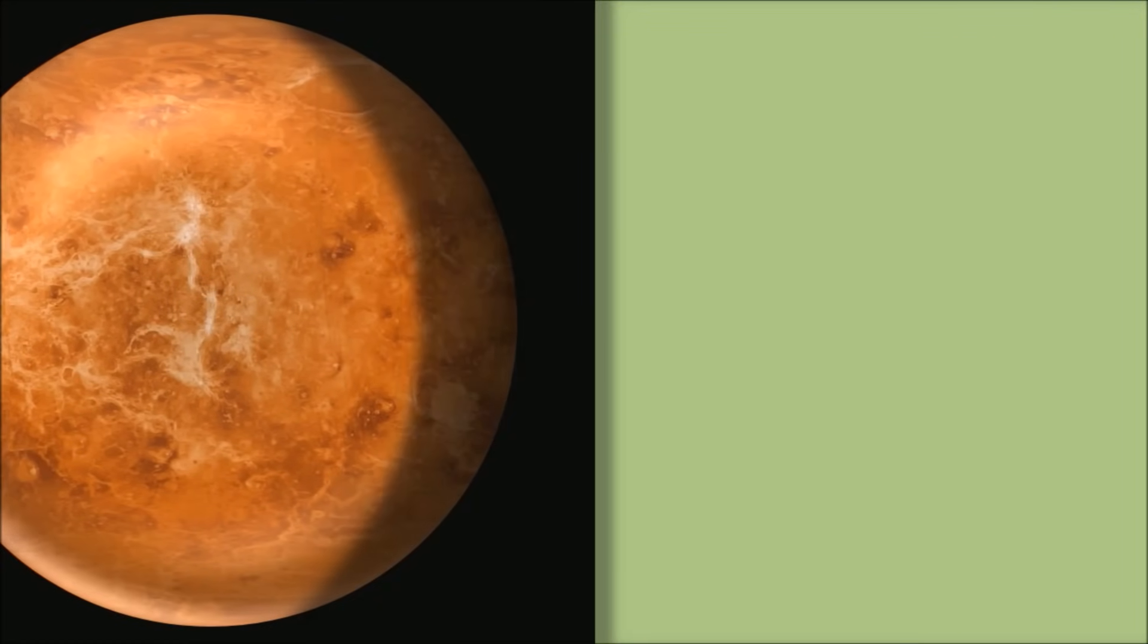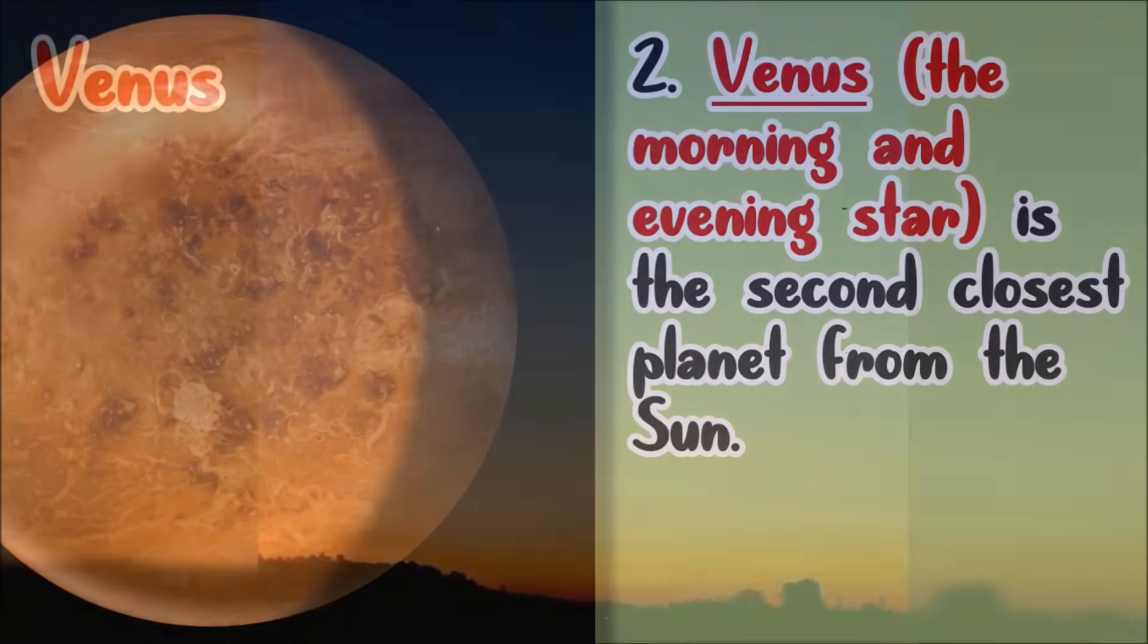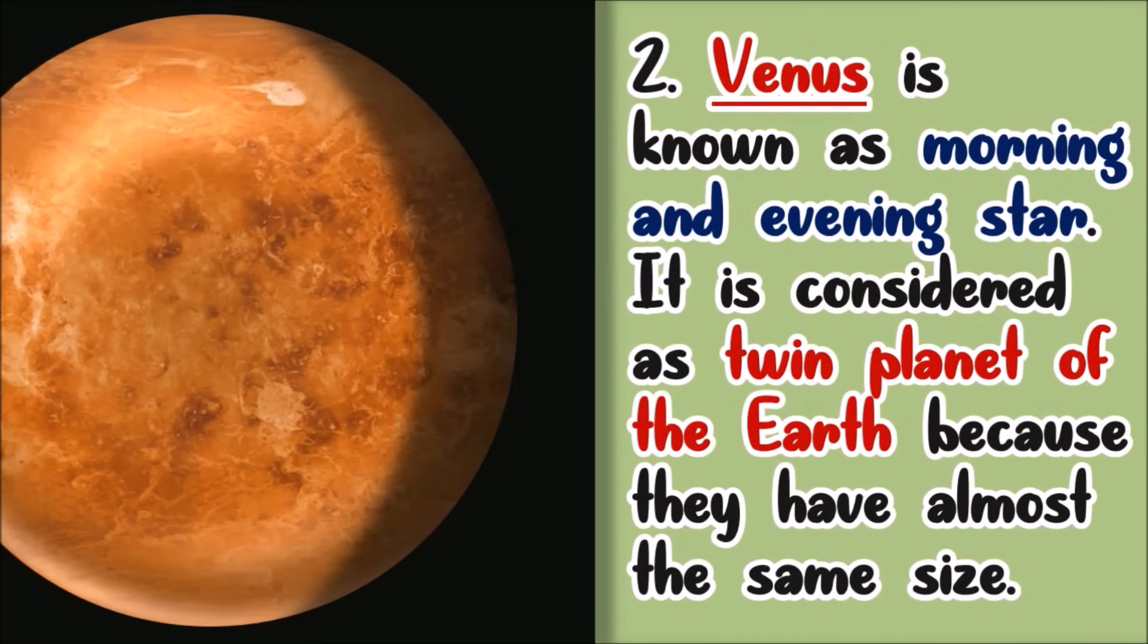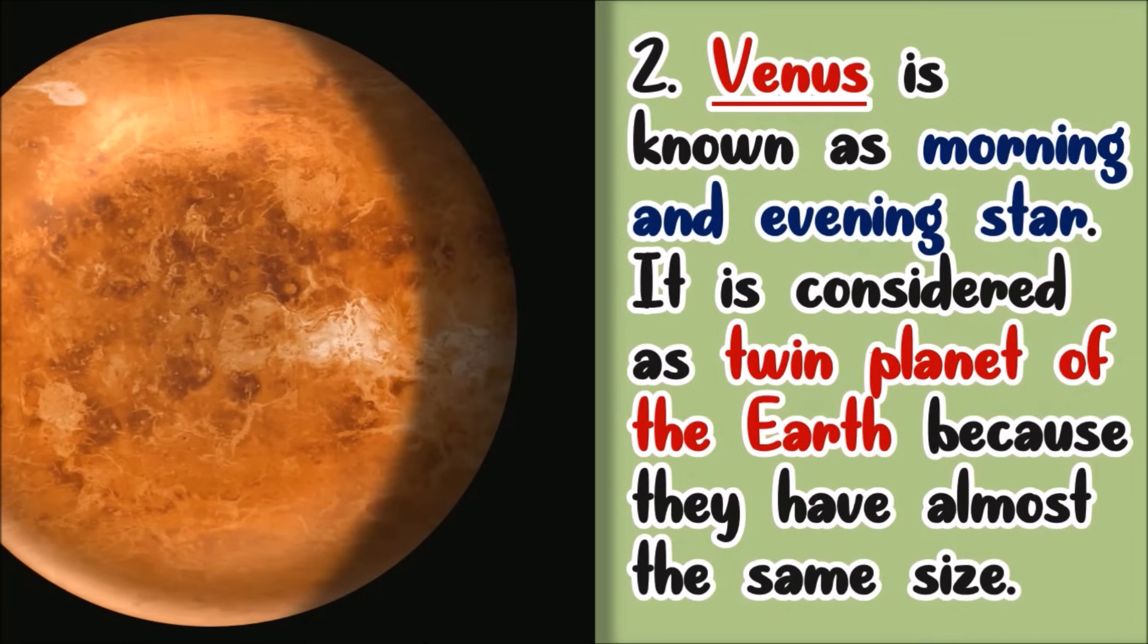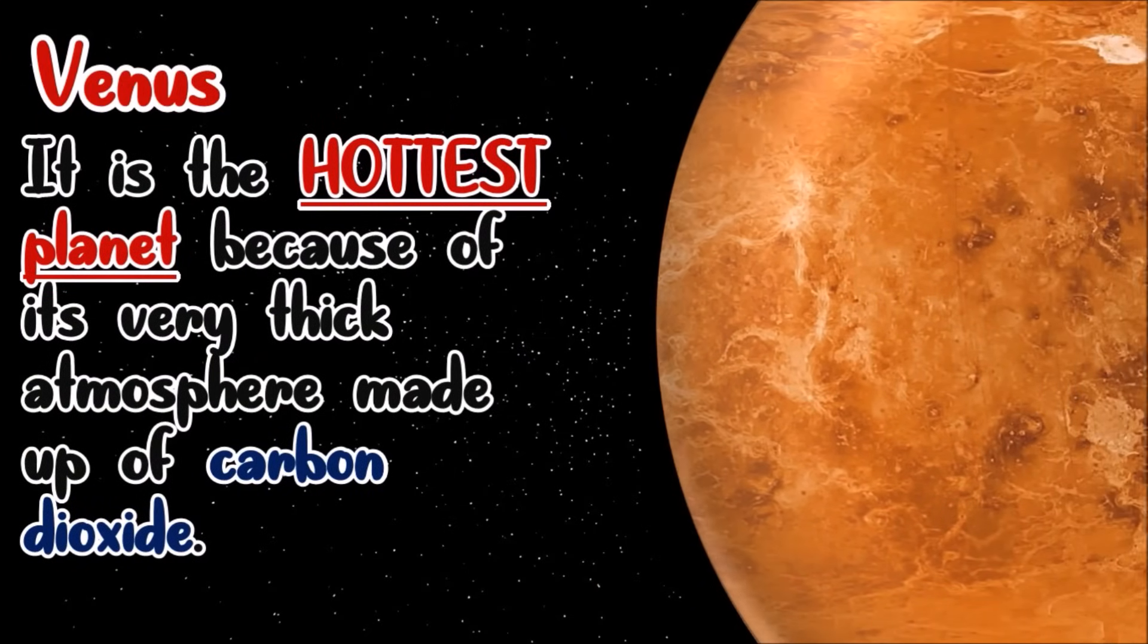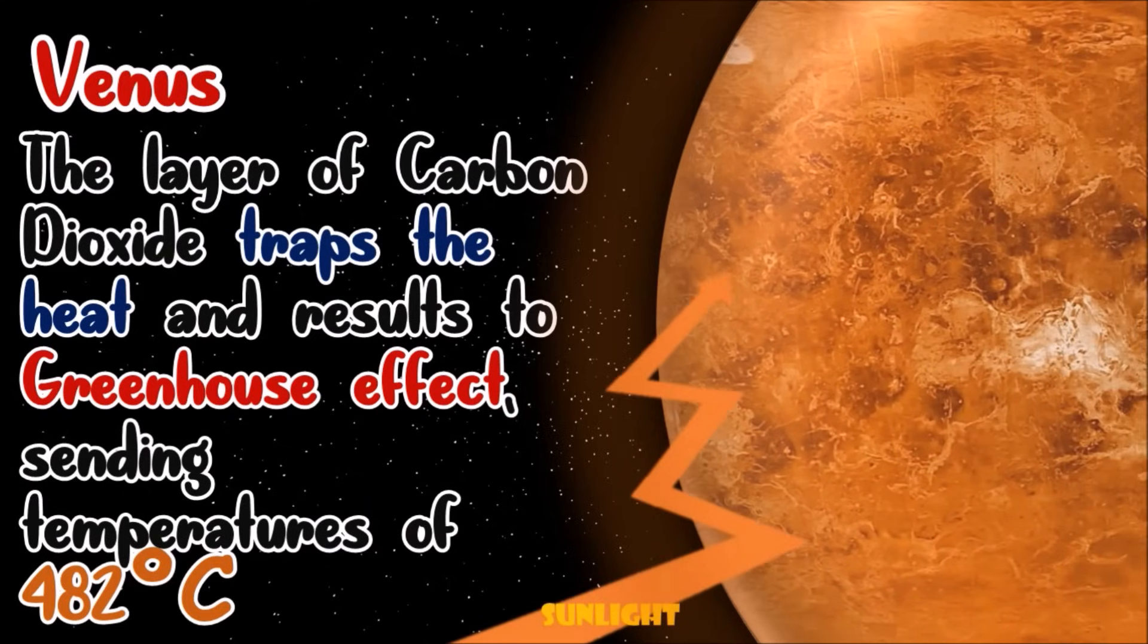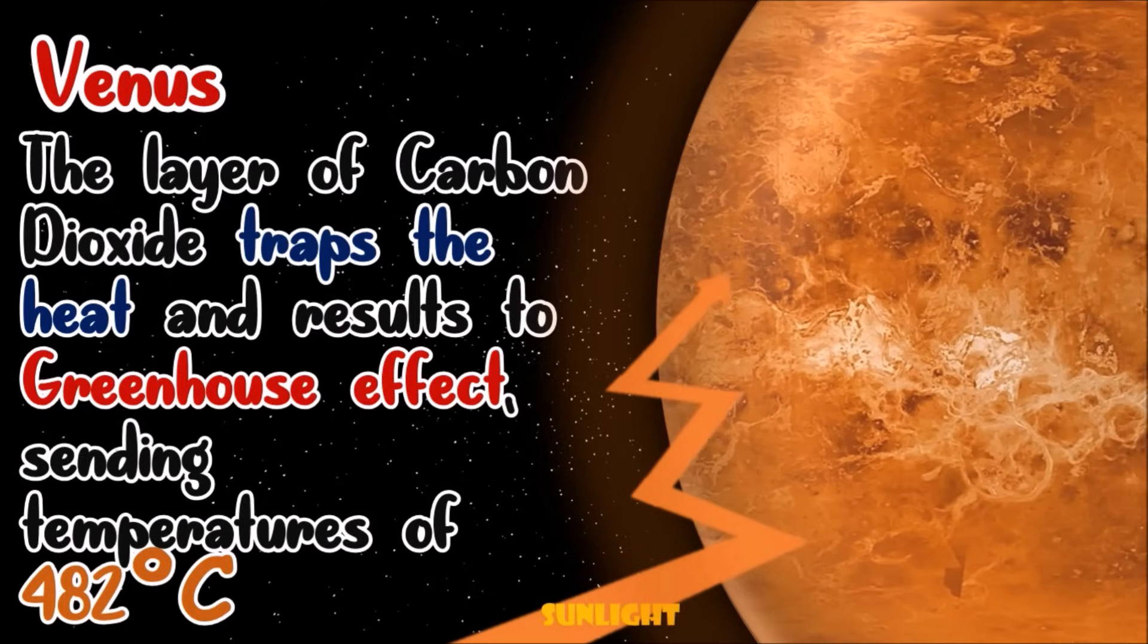Venus is the brightest object in the sky. Venus is commonly referred to as the morning and evening star. It is also considered as the twin planet of the Earth. Venus is known as the hottest planet because of its very thick atmosphere made up of carbon dioxide. The layer of carbon dioxide traps heat and results in greenhouse effect, sending temperatures to 482 degrees Celsius.